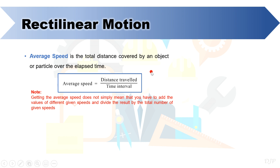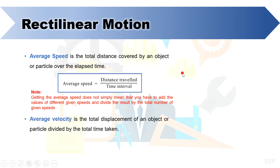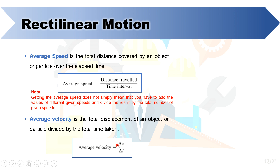Solving the average speed is not the same as computing the arithmetic mean. This formula is the right approach in getting the average speed. Aside from average speed, we also have average velocity, which is total displacement over time. Remember, displacement and average velocity are vector quantities, and displacement is a change in position of the particle or object. This formula for average velocity is delta x over delta t, or displacement over elapsed time. Notice the delta symbol, which means a change from initial to final condition.